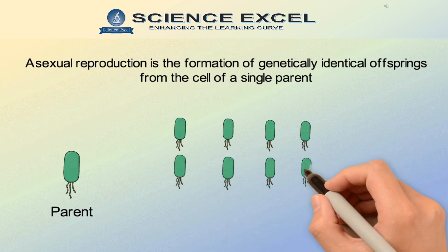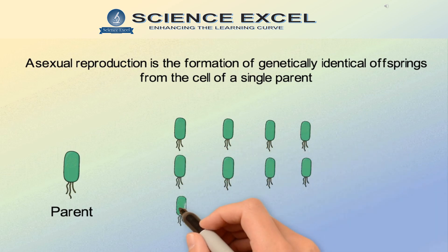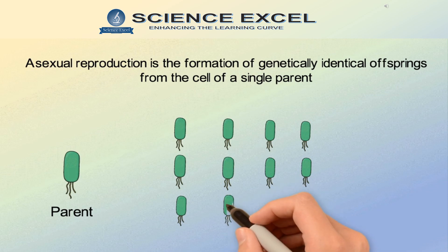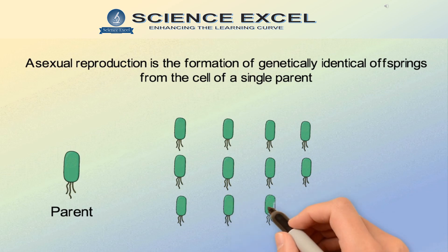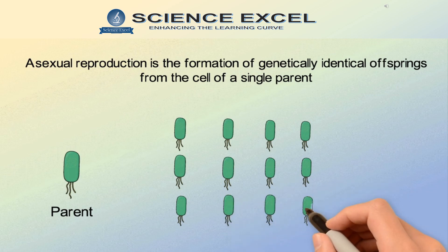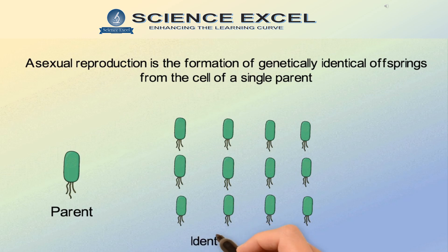Some of the parent organism's cells divide by mitosis, producing new cells that contain exactly the same genes as the parent cell. As a result, the offsprings are genetically identical to their parent and to each other.